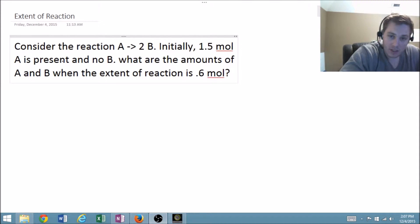Let's look at this problem from section A of chapter 6 in Dr. Atkins' physical chemistry book. Consider the reaction A goes to 2B with initially 1.5 moles of A and no moles of B. What are the amounts of A and B when the extent of reaction is 0.6 moles?